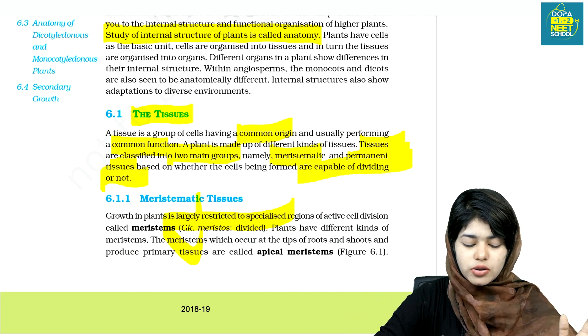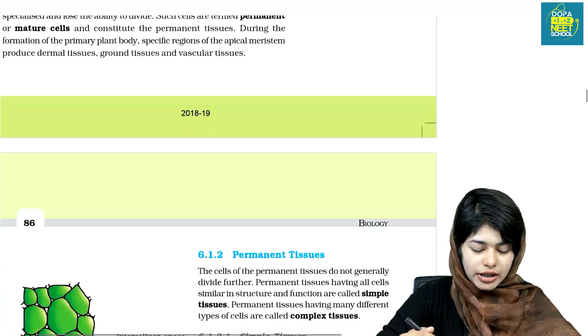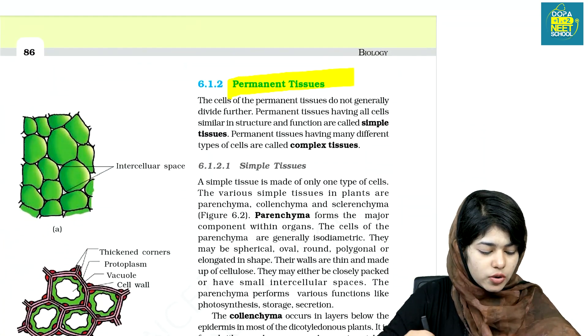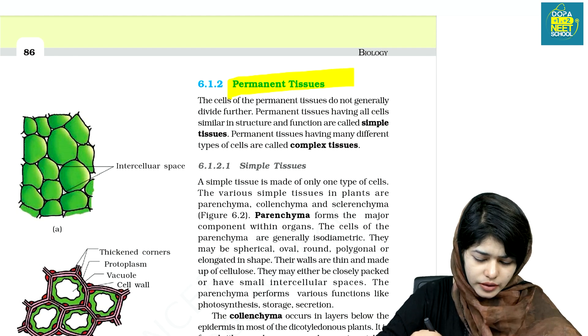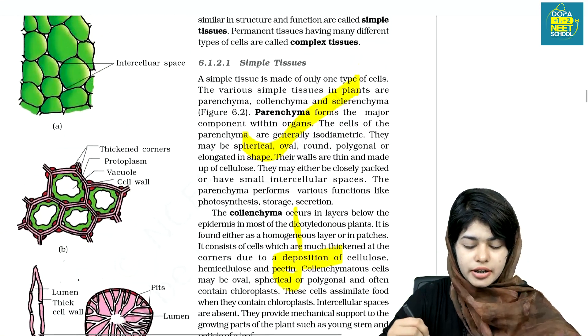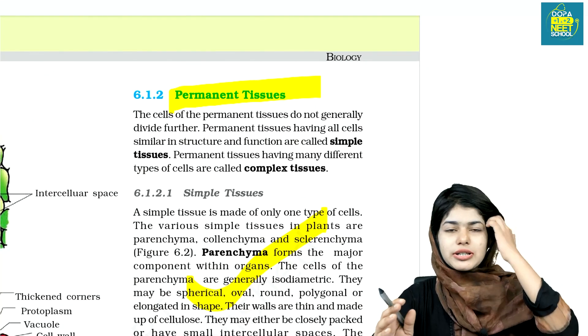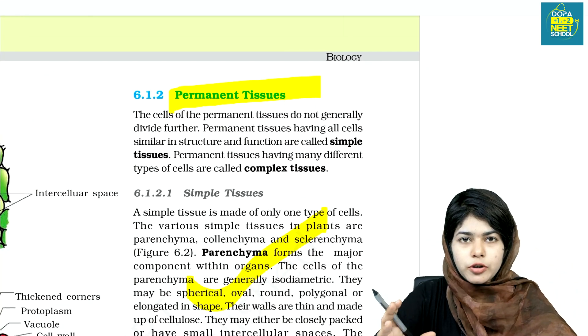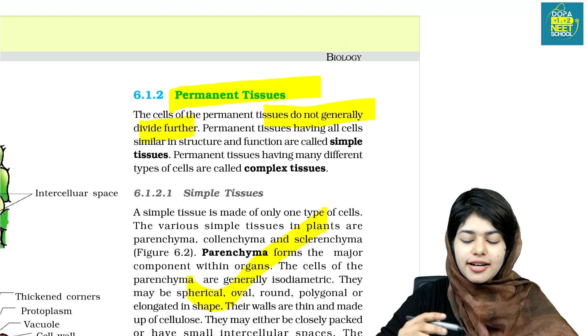Meristematic is called Permanent Tissues. If you have to divide a cell, you can't divide it. What distance is based on the capacity to divide? If you have to divide a cell, you can divide by the cell. There are two types of tissues in this permanent tissue. This is the same. If there is a permanent tissue, then you can divide it.